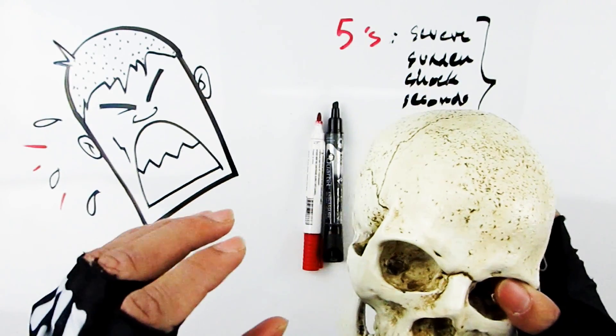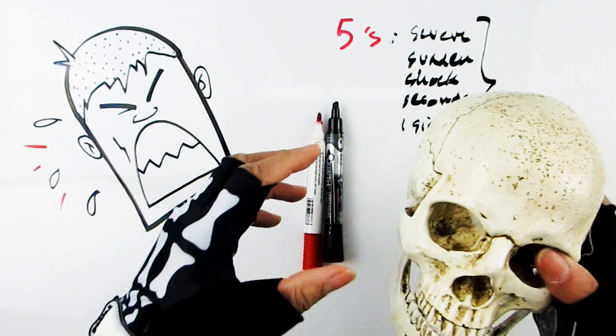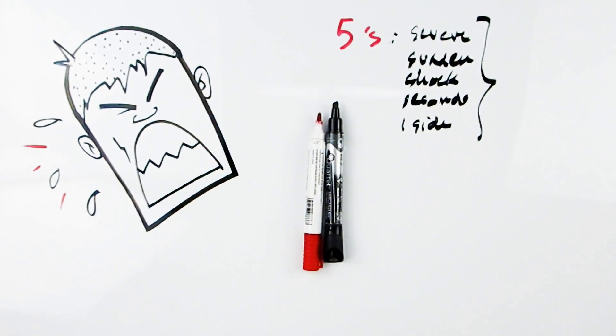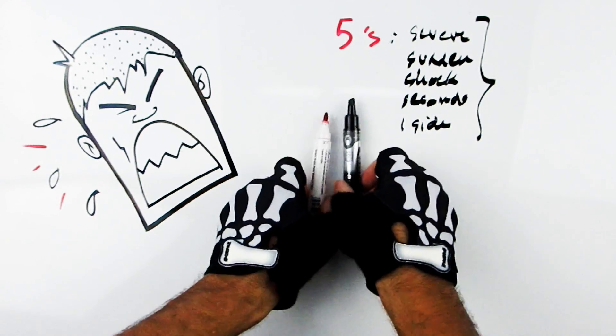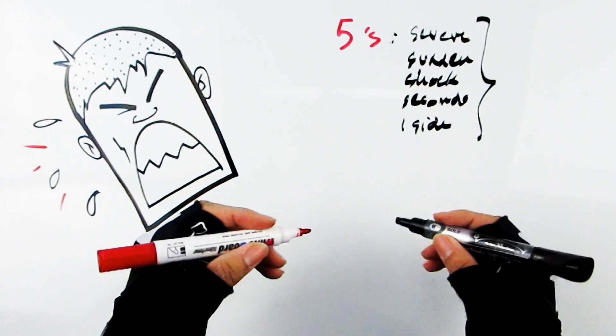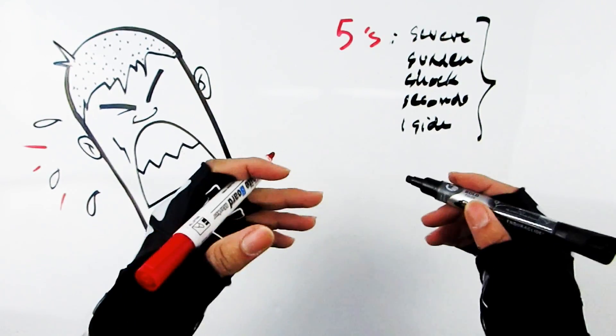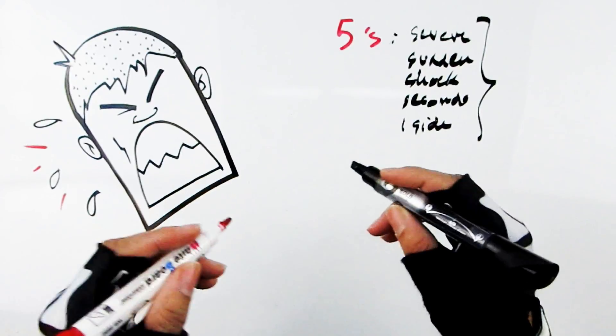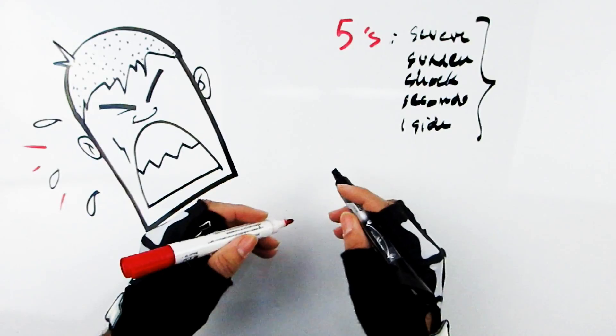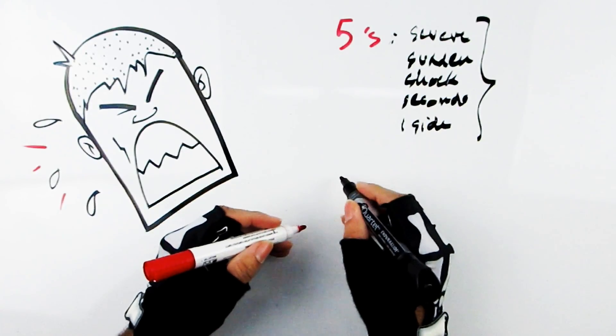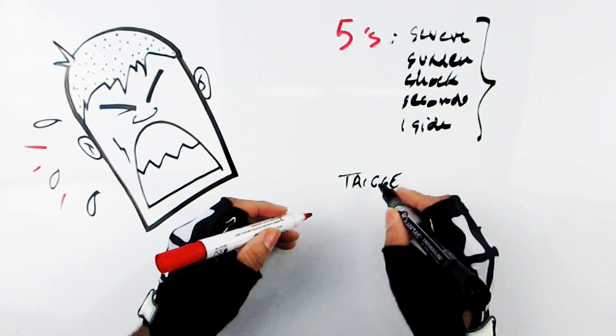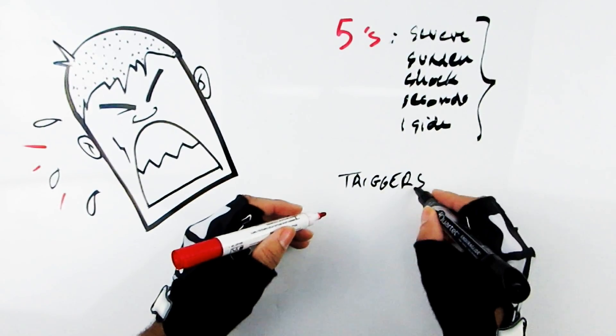We have a handle now on diagnosing trigeminal neuralgia, what might be causing it, and where it's emanating from. Let's talk about triggers. The next thing that people will come in and tell me: very often when people come in like this lady, they've already seen a dentist because they usually assume it's some kind of dental pathology. Another feature that will clue me in that maybe it's trigeminal neuralgia is this concept of triggers.